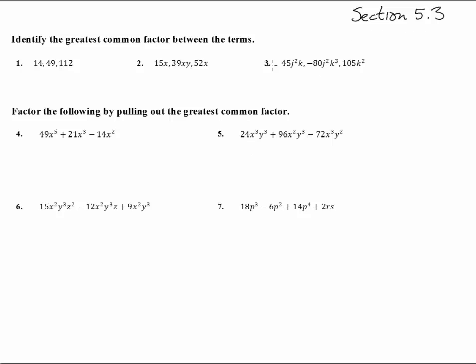Here we are in section 5.3 with numbers 1 through 7. Number 1: identify the greatest common factor. So we're trying to find the biggest thing that will go into all three of them.